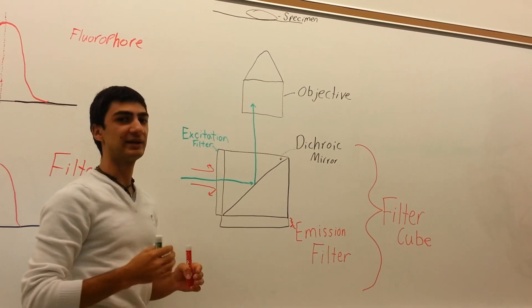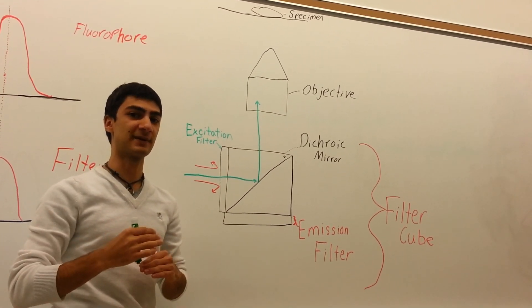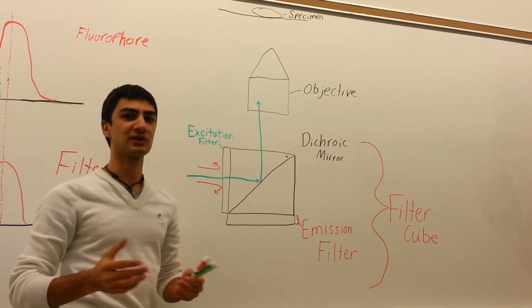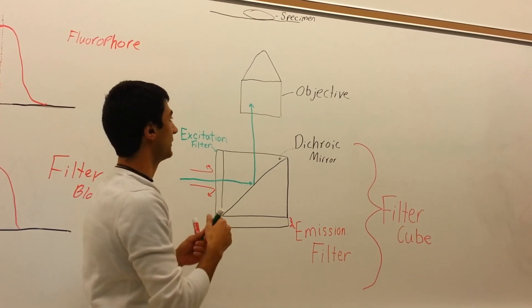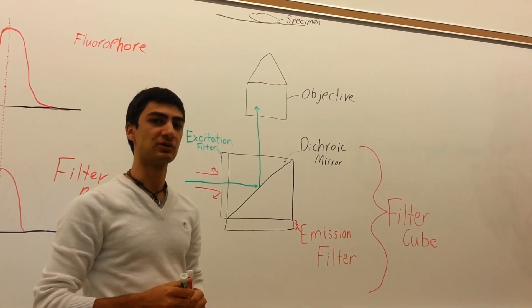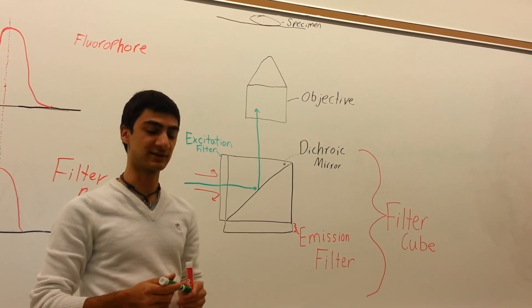This allows the light to hit the specimen at the same side, which helps reduce any stray light. This is called epi-illumination, which is another important concept in fluorescence microscopy.